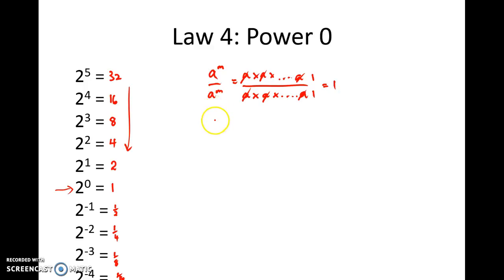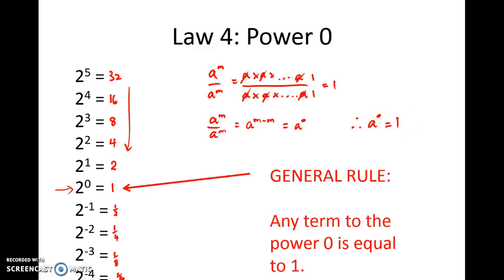You'll recall from the second law that a to the power m divided by a to the power m can be written as a to the power m minus m or a to the power 0. Now clearly these two things are the same. So it follows therefore that a to the 0 or any base to the power 0 will give us an answer of 1. And that's what our law states. That any term to the power 0 is equal to 1.